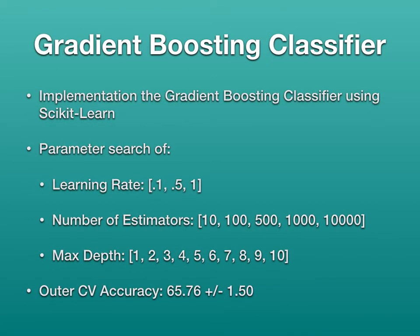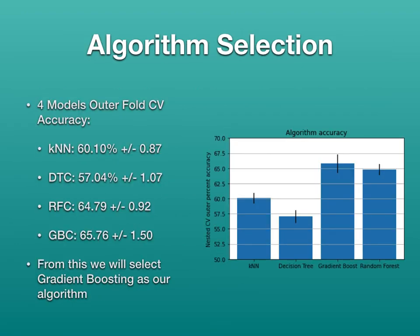The last algorithm I used was a gradient boosting classifier, implemented using scikit-learn. The parameters I used were learning rate of 0.1, 0.5, and 1; number of estimators of ten, one hundred, five hundred, one thousand, and ten thousand; and max depth of one through ten. The outer cross-validation accuracy I got from this was 65.76% plus or minus 1.5%.